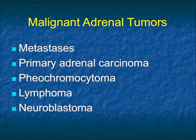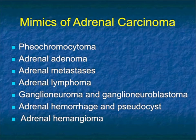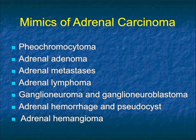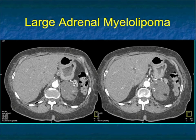Some of the other mimics: adenoma, pheos, ganglioneuromas and ganglioneuroblastomas are rare but look like large tumors. Hemorrhage occasionally may be due to something else, including Coumadin or maybe a met, but can look just like a primary adrenal carcinoma in terms of appearance. And then the rare adrenal hemangioma.